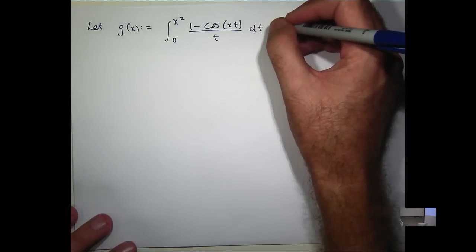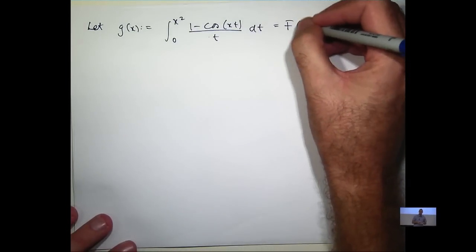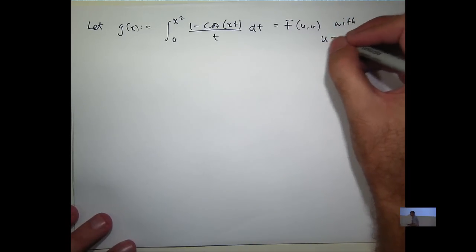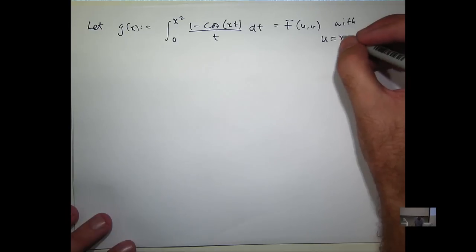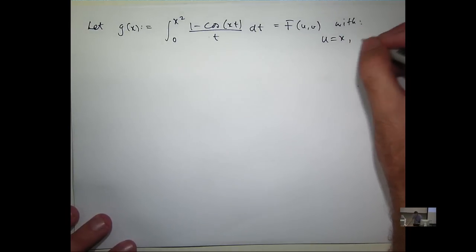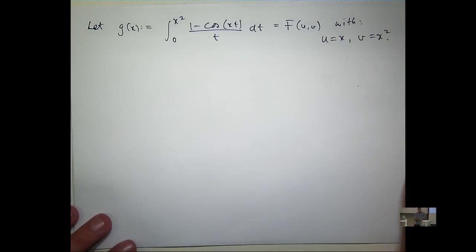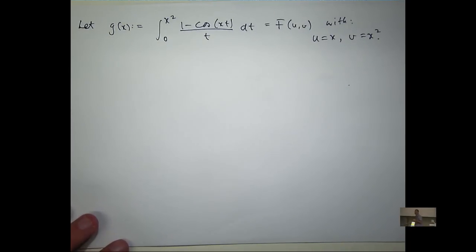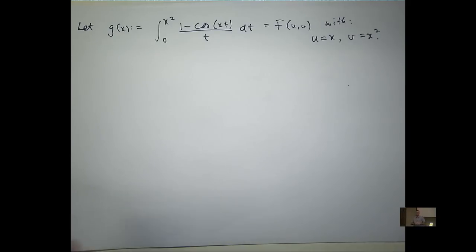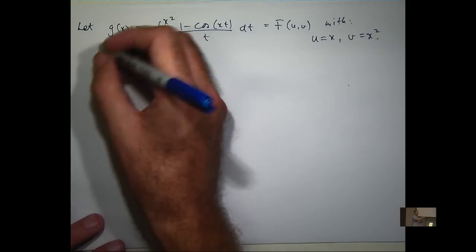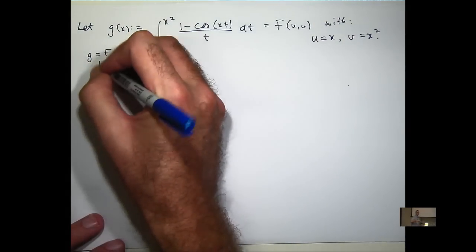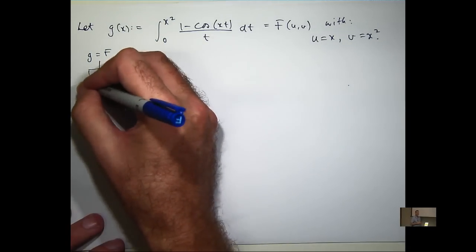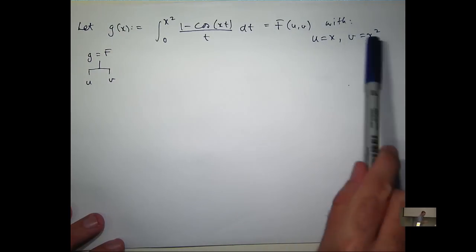Now, this is just big F of u, v with u equals x and v equals x². Let's see if we can formulate our chain rule. We've got g equals big F. Big F depends on u and v. And u depends on x and v depends on x.